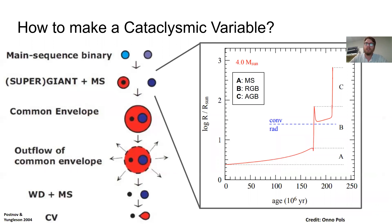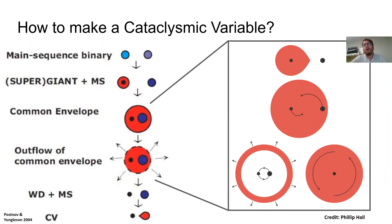At some point the more massive star will become a red giant and then an AGB giant star, dramatically increasing in size. Because of that, it will exceed its Roche lobe and material will start to flow to the secondary star. Because this involves mass transfer from a high-mass star to a low-mass star, this process is unstable. What you basically get is the red giant engulfing the secondary star — the so-called common envelope — engulfing both the core of the red giant, which will become the white dwarf, and the secondary star. These two objects are still rotating inside this giant star atmosphere.